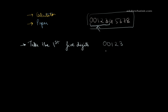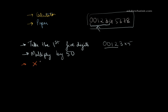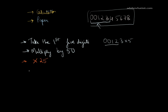Then multiply by 50. I don't know your phone number — my goal is to reveal it, that's my challenge. Once you have multiplied by 50, the next step is to multiply by 25. Once you have multiplied by 25, multiply by 16. After you have multiplied by 16, multiply by 10. This involves a lot of multiplication, which is why I'm asking you to use your calculator.